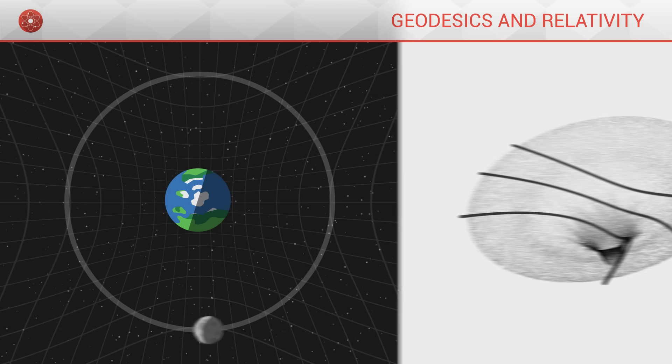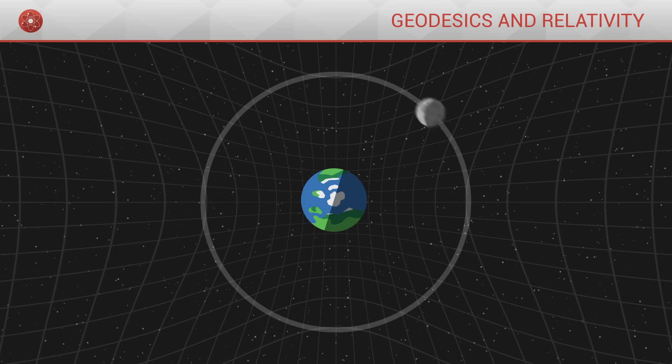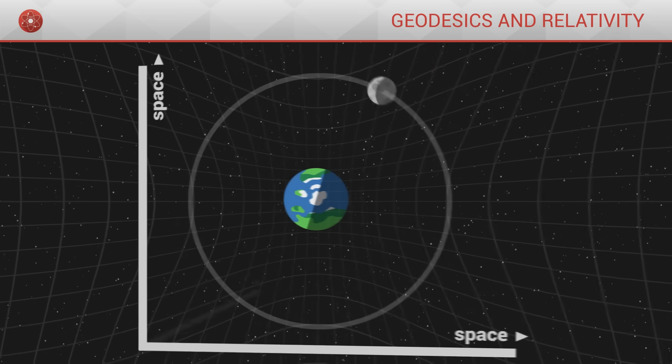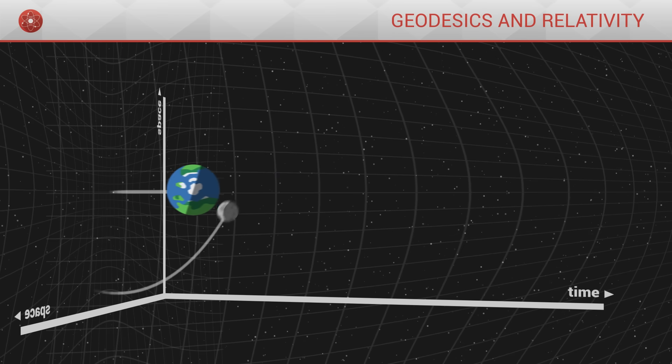The only difference is that this geodesic is not only a line through space, it also describes the trajectory through time.